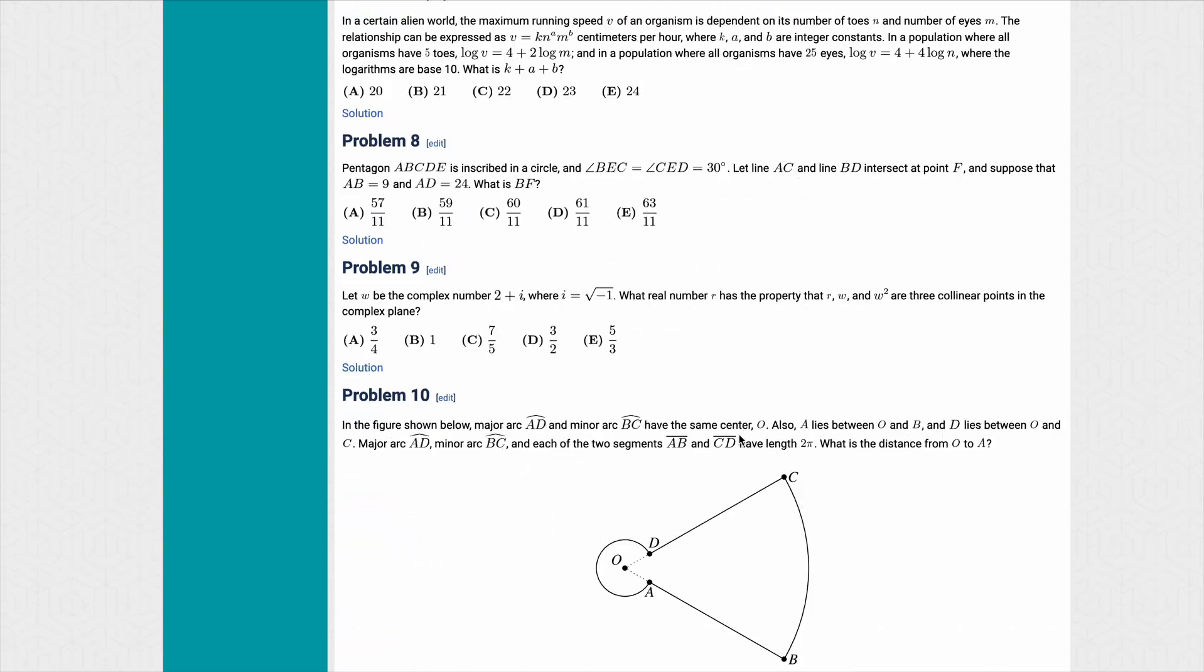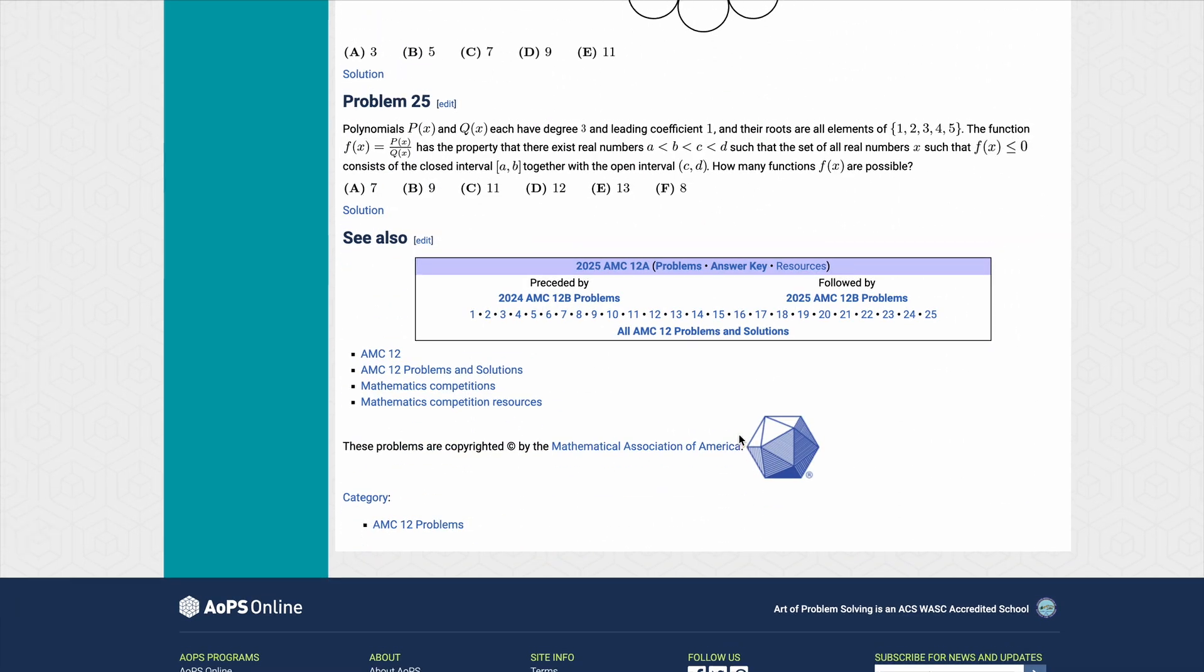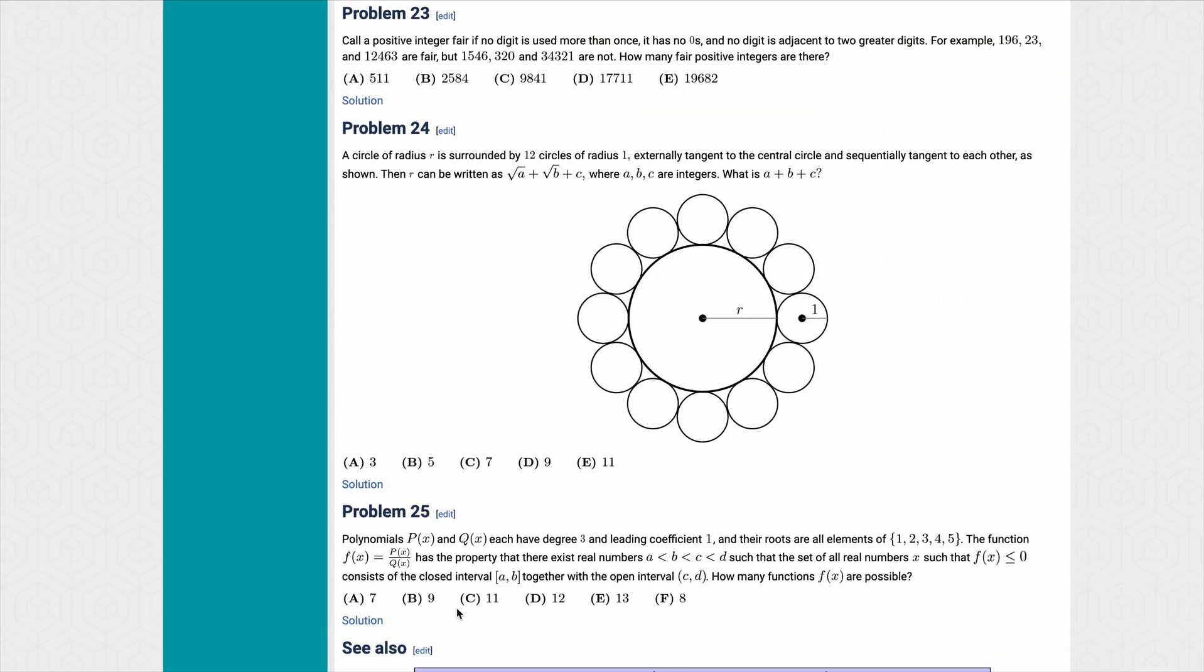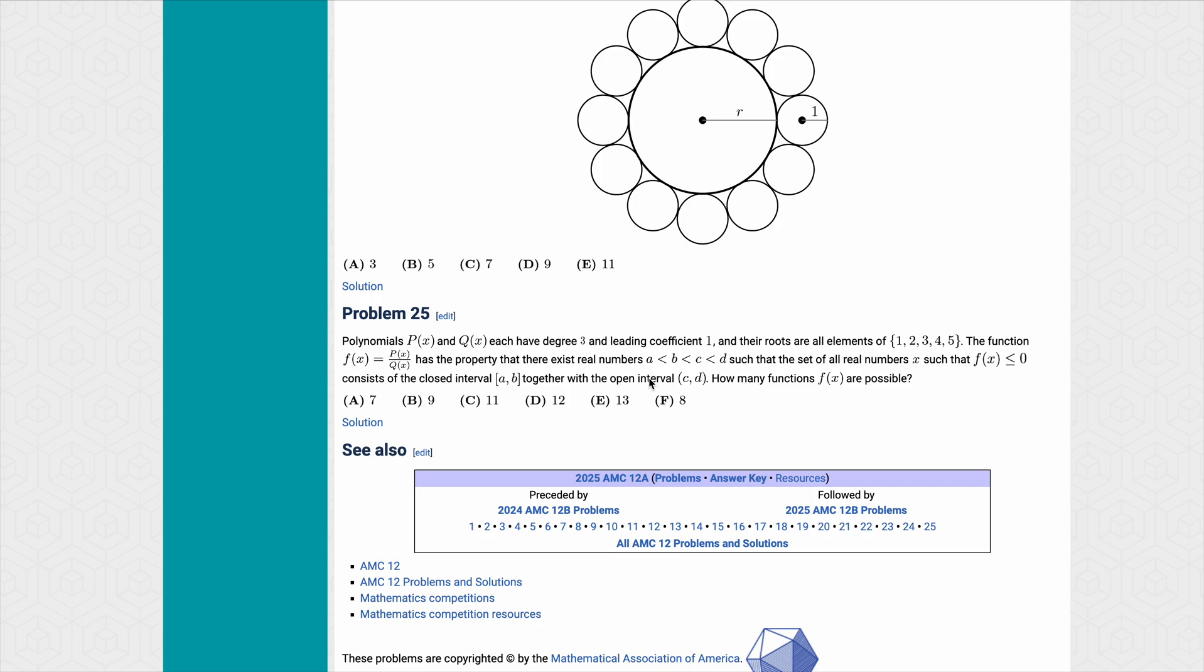So overall the difficulty was on the higher end because of number 25, the answer, none of the answer choices were correct. So most likely what will happen is everyone will get six points on this question. Even the people who didn't even attempt it or even look at this question. So that's definitely going to cause the cutoff to be higher because specifically for the people on the borderline of Amy, most of them are not going to be attempting number 25 at all. So that 1.5 points becomes a six points. So that's a plus 4.5.